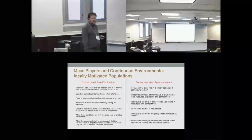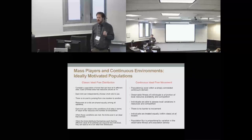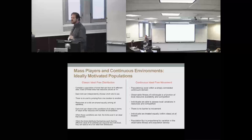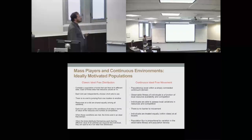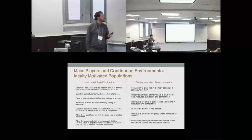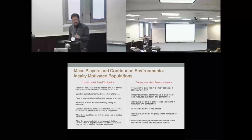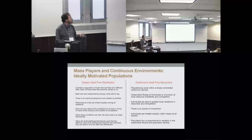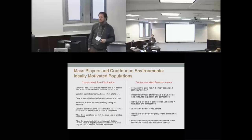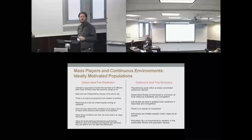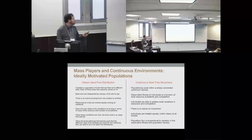Now let's combine the continuous environment with mass populations. The treatment I'll discuss for the remainder is called ideally motivated populations — essentially a continuum analog of the ideal free distribution. According to the classical ideal free distribution, we had sites with their own resource values. Here, we have a connected continuum domain where resources may vary — there can still be resource heterogeneity making the environment look different at different locations.